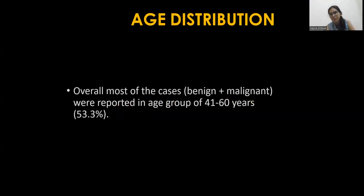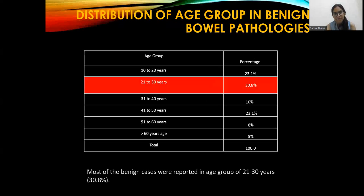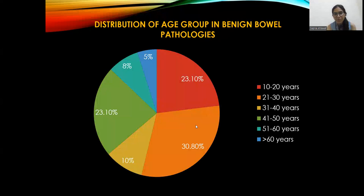Coming to the observations and results: overall, most cases were reported in the age group of 41 to 60 years. Regarding the distribution of age groups in benign bowel pathology, most benign cases were reported in the age group of 21 to 30 years, with 30.8% of patients belonging to that group, followed by 23.1% in the 41 to 50 year age group.